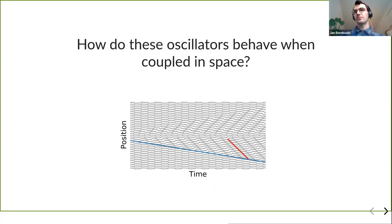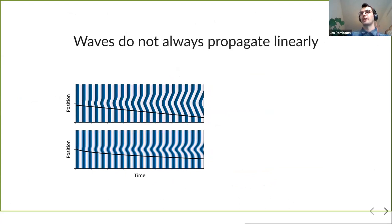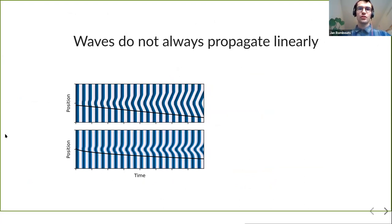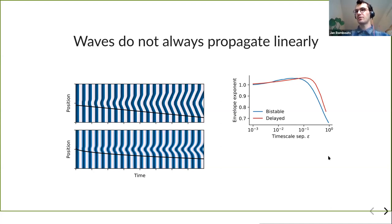Now, what are the waves like when you couple these systems in space? One observation is that they do not necessarily propagate linearly outward. In two spacetime plots: in the top plot, the black envelope line is straight — the pacemaker's influence propagates linearly. In the bottom plot, it's more like a square root, much slower — sublinear spreading. This depends on the epsilon parameter: for low epsilon it is linear or even slightly superlinear, then it goes down as epsilon increases. So larger timescale separation enhances wave propagation.